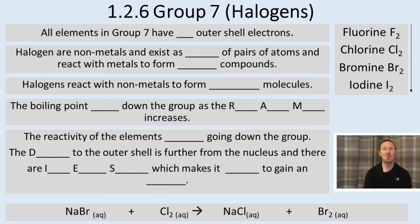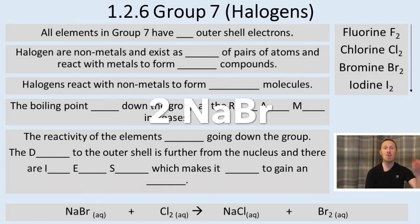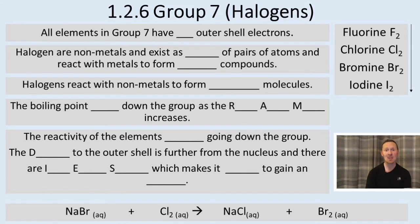In order to balance this equation, notice that on the left hand side there's two chlorine atoms, Cl2, and on the right hand side there's two bromine atoms, Br2. So you need to put a 2 in front of the NaBr and a 2 in front of the NaCl. The balanced equation is 2NaBr + Cl2 → 2NaCl + Br2.